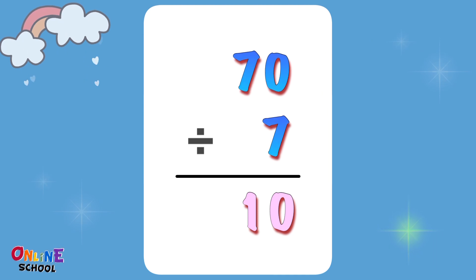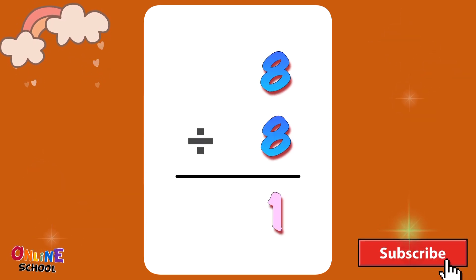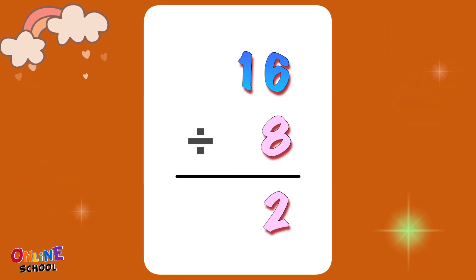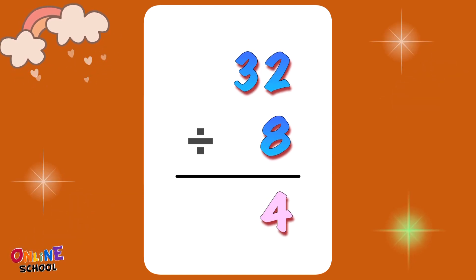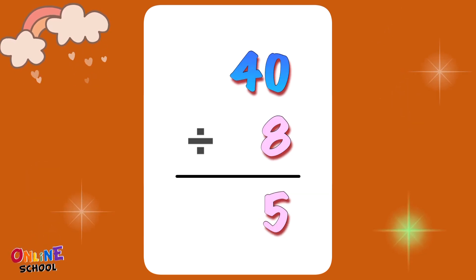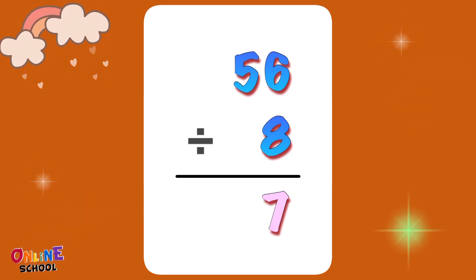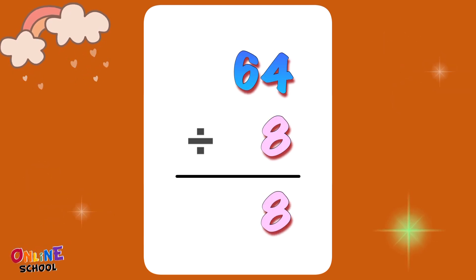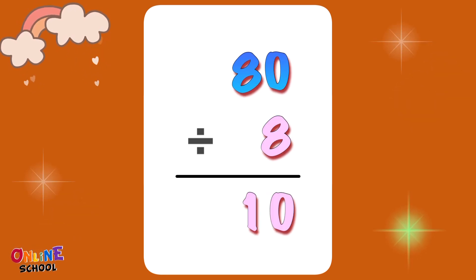Divided by 8. 8 divided by 8 equals 1. 16 divided by 8 equals 2. 24 divided by 8 equals 3. 32 divided by 8 equals 4. 40 divided by 8 equals 5. 48 divided by 8 equals 6. 56 divided by 8 equals 7. 64 divided by 8 equals 8. 72 divided by 8 equals 9. 80 divided by 8 equals 10.